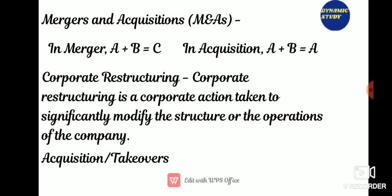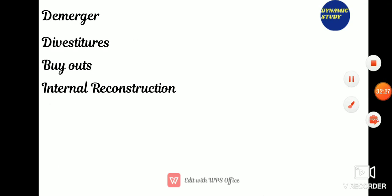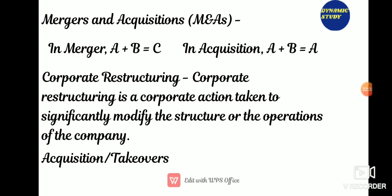Mergers and acquisitions involve the process of combination of two companies into one. The goal is to achieve synergy where the whole new company is greater than the sum of its parts. Merger (A + B = C) is when two companies form a different new company. Acquisition (A + B = A) is when one company absorbs another. The merger occurs when two companies join forces, typically between businesses of about the same size, with friendly and mutually agreed terms.